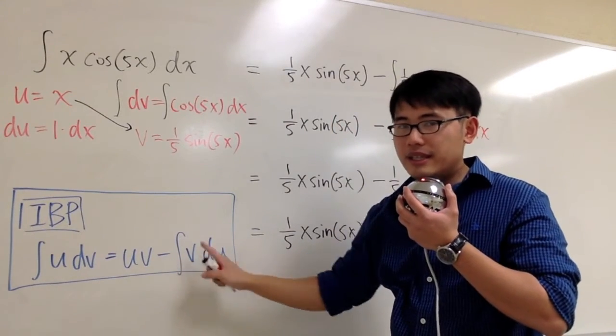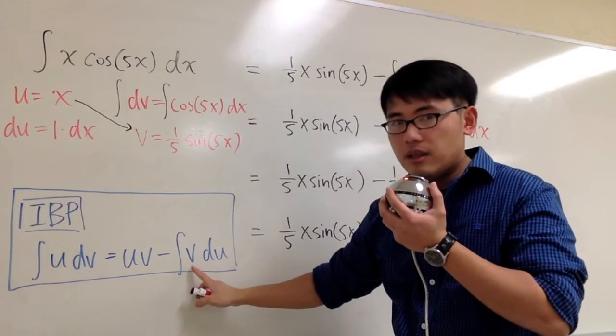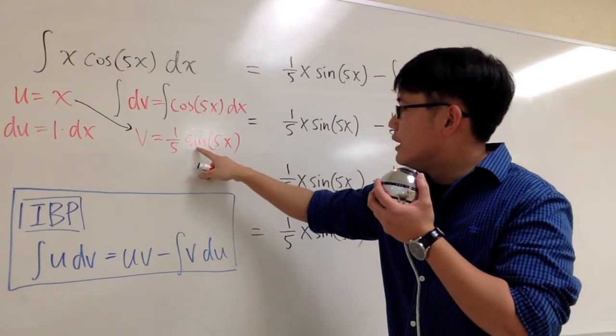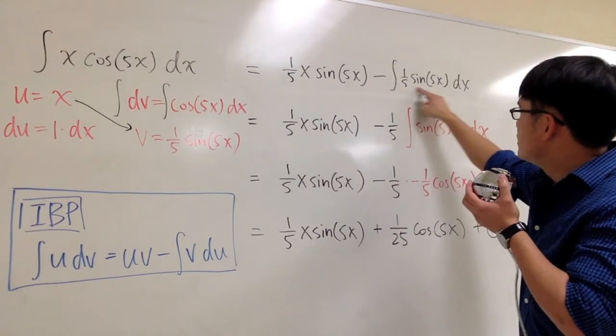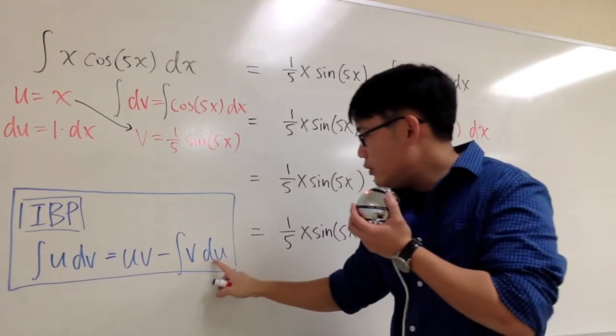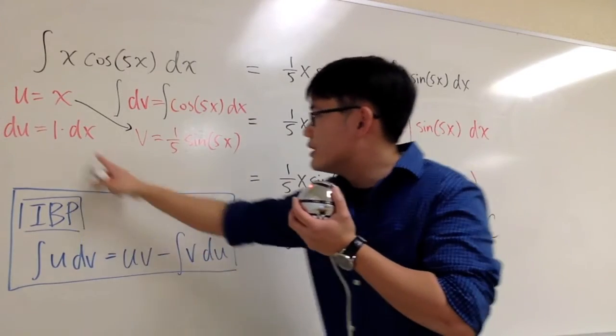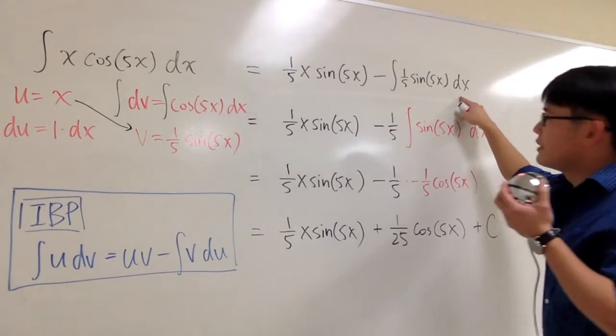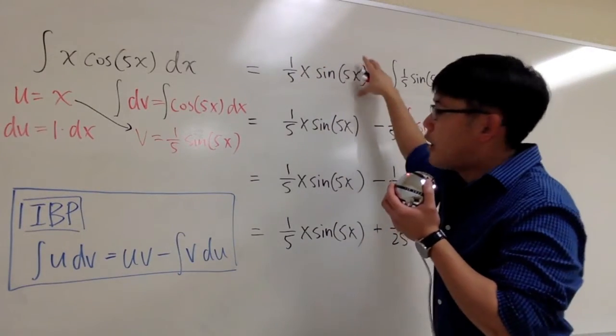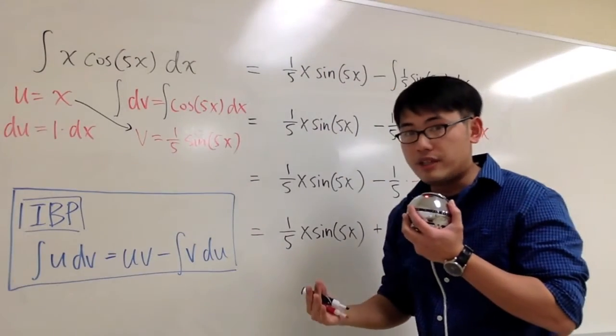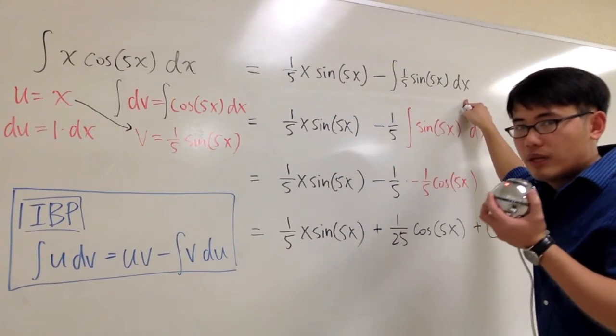And then we have to subtract the integral. v is 1/5 sine of 5x. So I put this down right here. du is dx, right? du is the same as dx. So we have that dx right here. And as you can see, the first part, it's the part of the answer already. There's no more integrations. But then, this is still another integral that we have to work out.